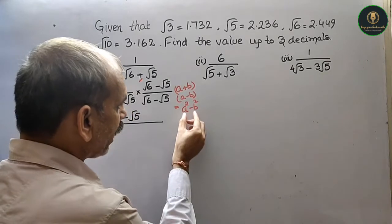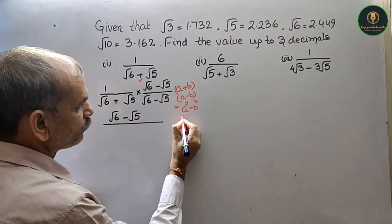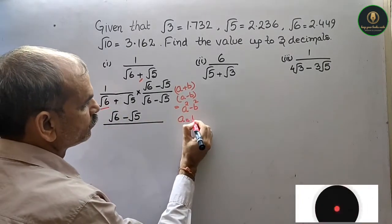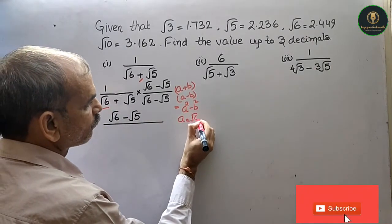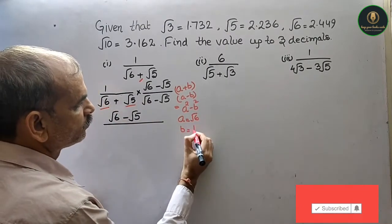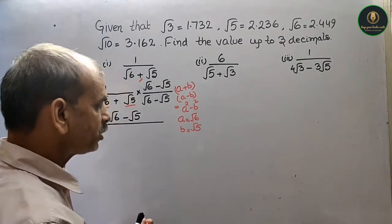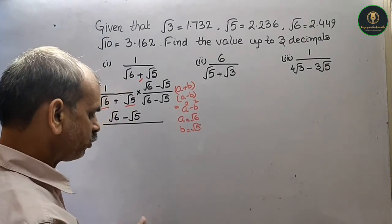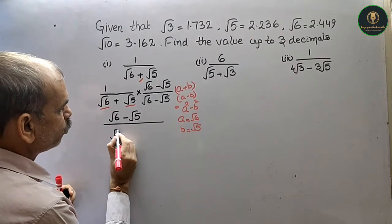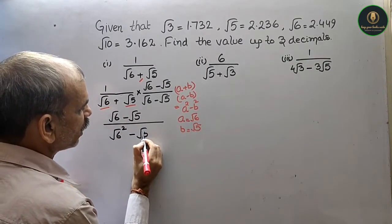तो अब यहाँ पर हम इसकी value substitute करेंगे. a क्या है? a is equal to root 6. And b क्या है? root 5. तो यह value हम इसमें put करेंगे. तो यहाँ पर आएगा root 6 square minus root 5 square.